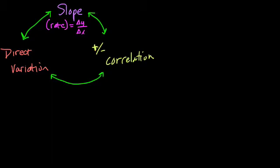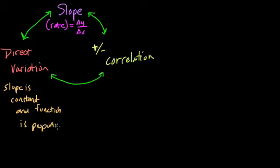Direct variation is specifically referring to a type of situation where the slope is constant and the function is proportional. This means two things: your slope is always the same, and you only have to multiply x by a number to get to y.